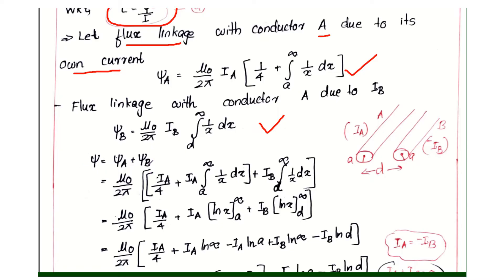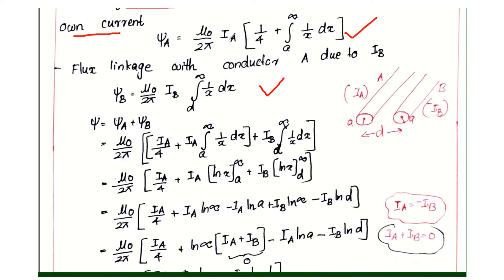ψ is equal to ψA plus ψB. ψA and ψB add. That is μ₀ divided by 2π, first term IA into 1 by 4 plus IA into integral A to infinity, 1 by x dx.